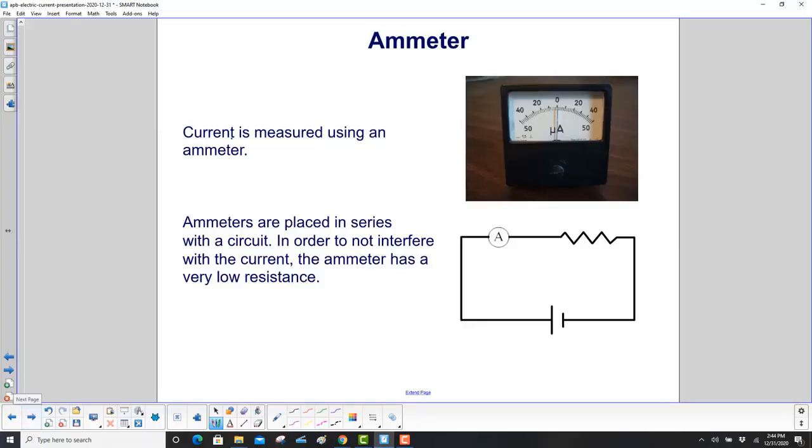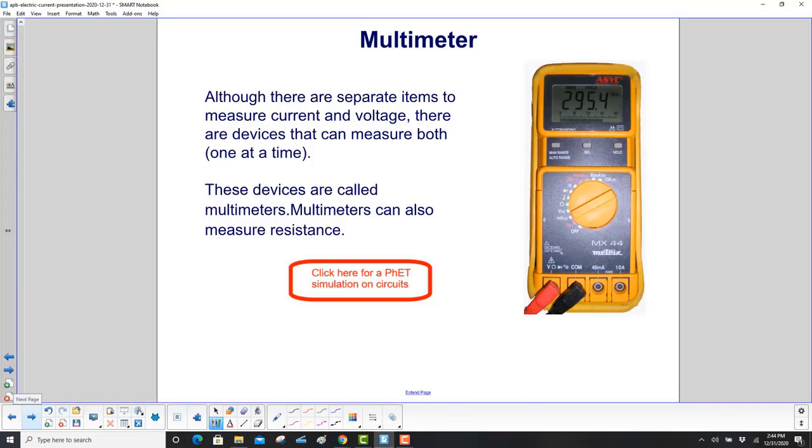Current is measured using an ammeter. Ammeters are placed in series with the circuit. In order not to interfere with the current, the ammeter has a very low resistance. The current going through the ammeter is the same as going through this resistor. Although there are separate items to measure current and voltage, there are devices that can measure both—one at a time. These devices are called multimeters. They can also measure resistance.